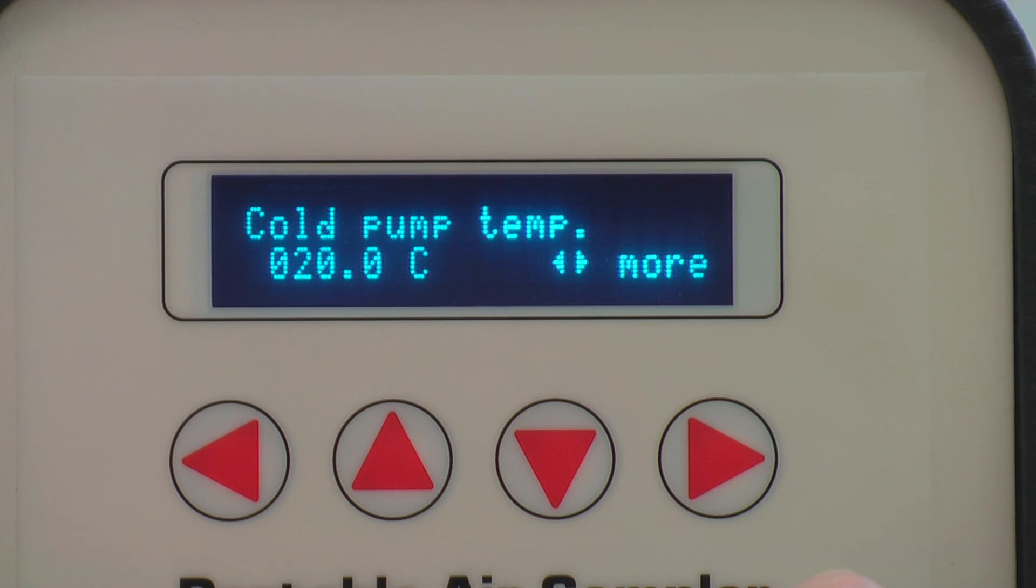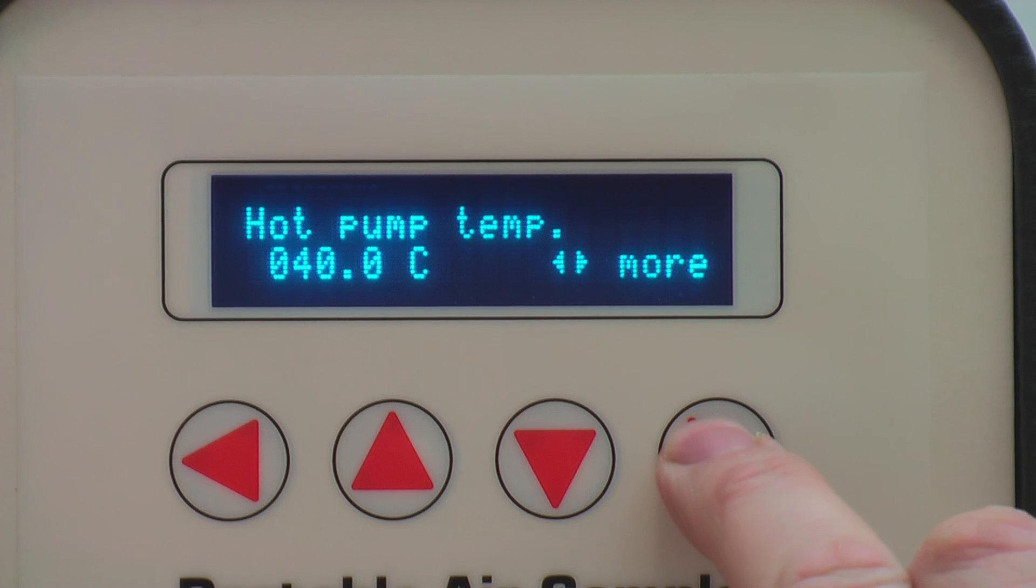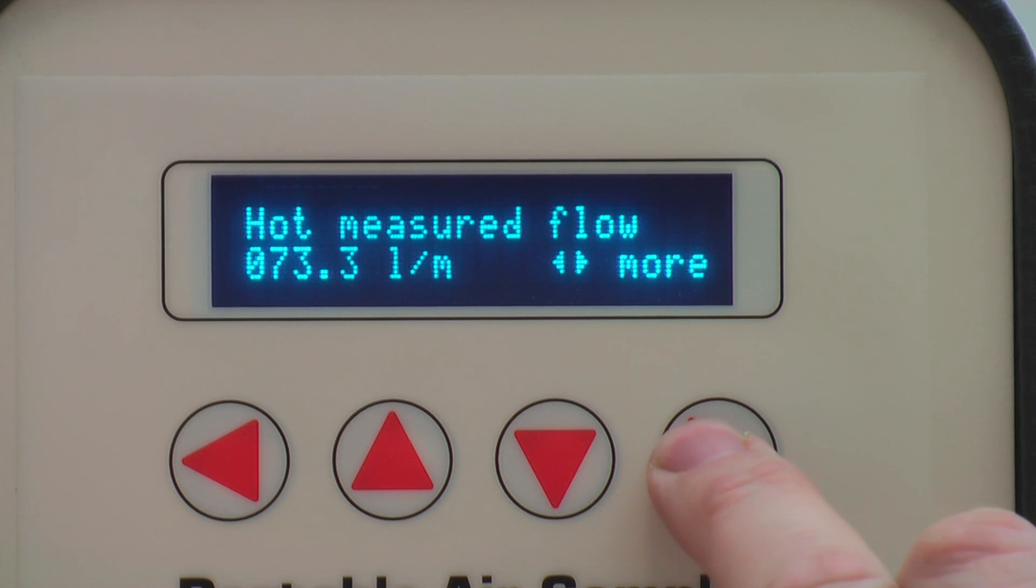Pressing down allows you to view pump diagnostics. Pressing the right arrow key will allow you to cycle through the different diagnostics. Pump diagnostics can be inspected by pressing the right arrow and cycling through until you reach cold pump temperature. All of this information is useful for your internal processing and calibration checks.